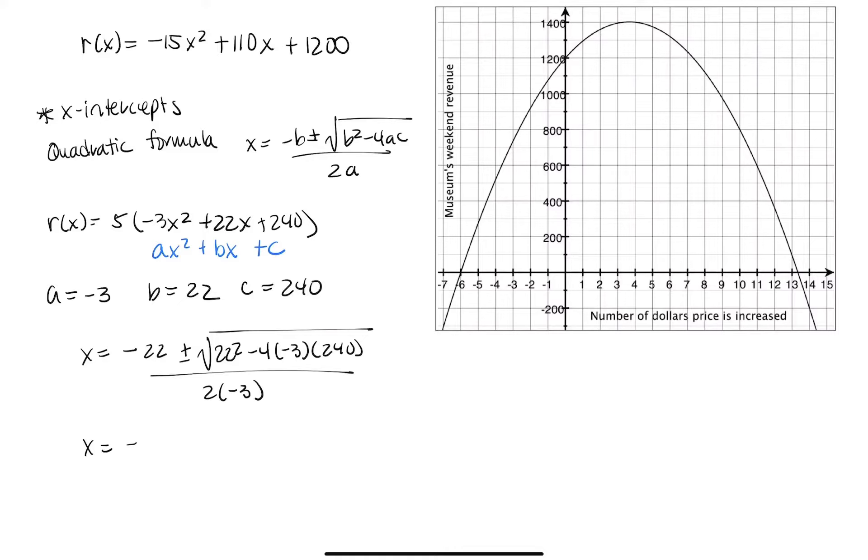So this works out to be negative 22 plus or minus the square root of 3,364 over negative 6, which is negative 22 plus or minus 58 over negative 6.